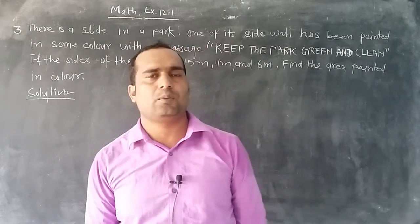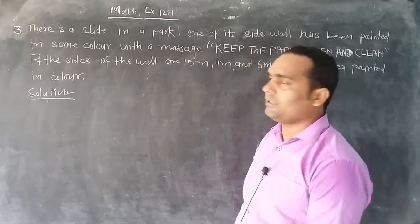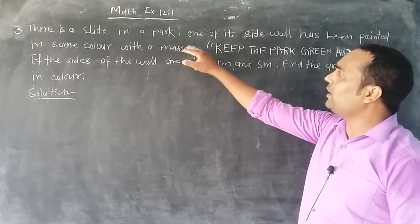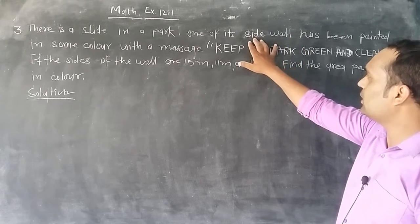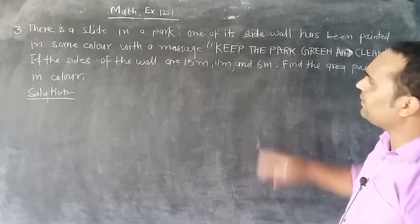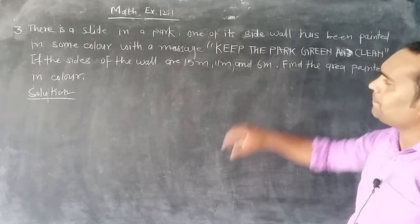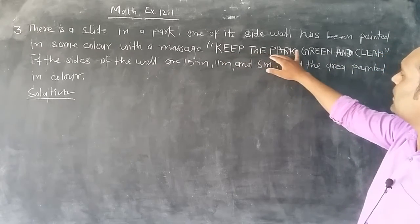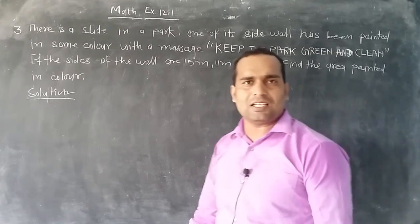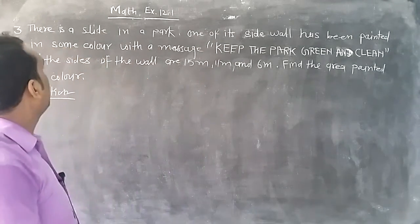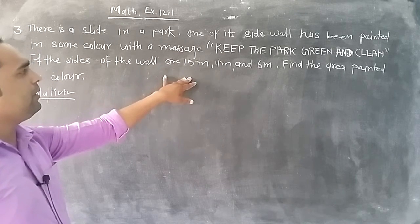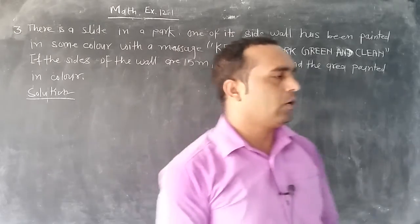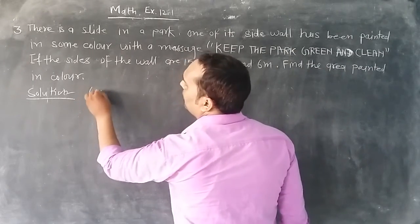Hello students, now question number 3 of Exercise 12.1. In this question, there is a slide in a park. One of the slide walls has been painted in some color with a message 'KEEP THE PARK GREEN AND CLEAN'. If the sides of the wall are 15 meter, 11 meter and 6 meter, find the area painted in color.